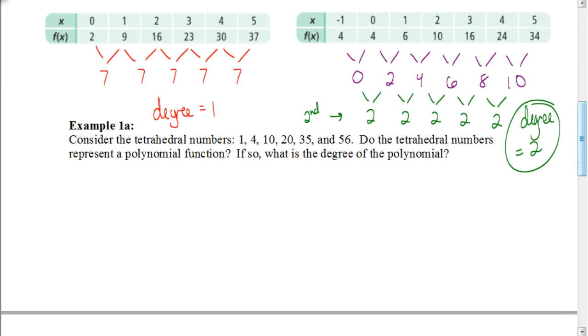Now sometimes they're not going to be in a table, sometimes they just give us the sequence and numbers. So when they do that, we have to create our own table, or at least list out the sequence. So here I've done that for us, so we have the sequence 1, 4, 10, 20, 35, and 56. So these are the tetrahedral numbers, and we want to figure out if there is a polynomial that exists that would give us these numbers, and if so, what would the degree of the polynomial be? So just like before, we're going to find the differences in each of these terms of the sequence.